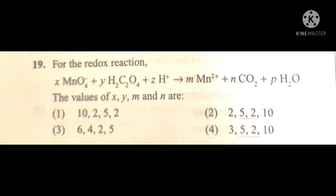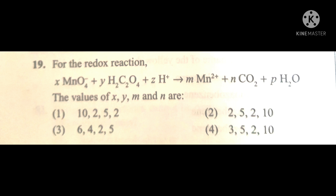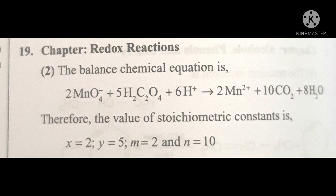In this question, option second and option fourth can be the answer because the probability of 5 and 2 being similar in the center. To decide the correct answer, we take the help of other options. We have to decide whether the start should be 2 or 3. The probability of 2 being repeated in other options is more, so this helps find our answer. Therefore, the second option will be the correct answer. You can verify your answer here.